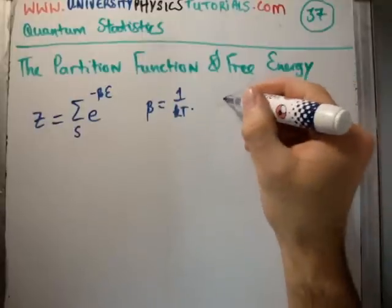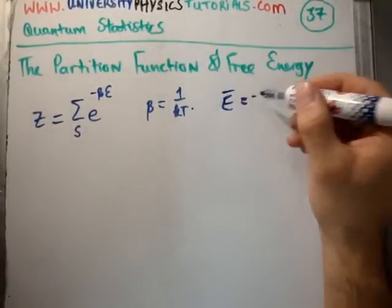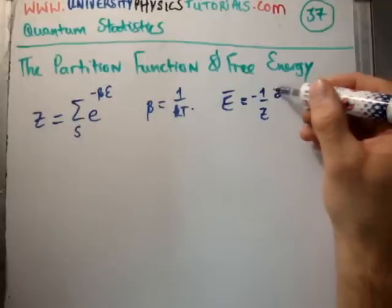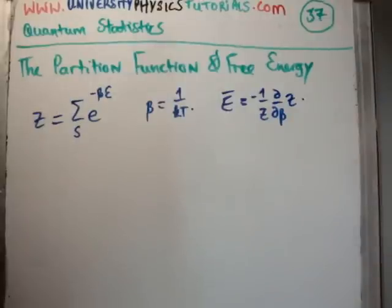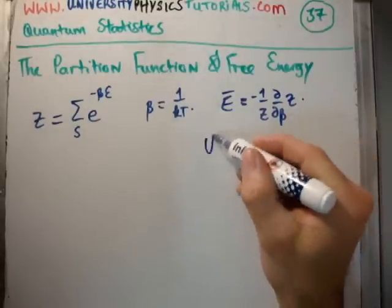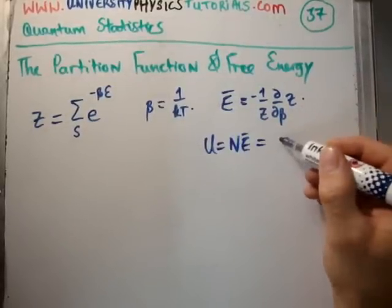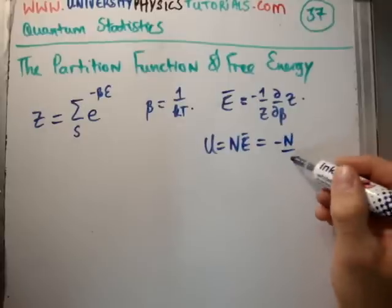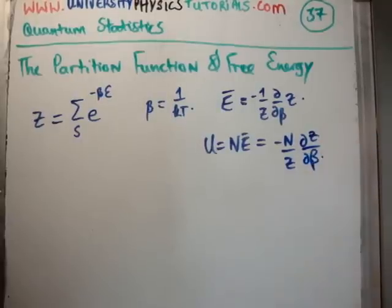What we proved is that the average energy for a single particle can easily be gotten from the partition function. The total energy of a system U is minus N over Z times del Z del beta. By just getting the partition function we're able to get the total energy in the system very quickly.